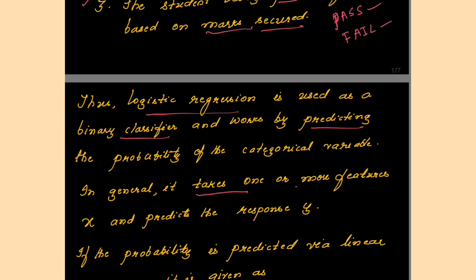Thus logistic regression is used as a binary classifier and works by predicting the probability of the categorical variable. In general, it takes one or more features x and predicts the response y. In linear regression, y = a0 + a1*x, where x is the independent variable and y is the dependent variable. Here in logistic regression, since it predicts categorical values, the output will always be in the range of 0 to 1.